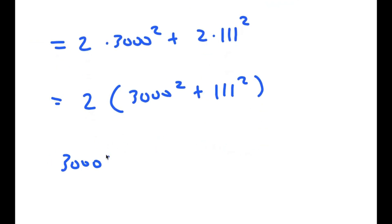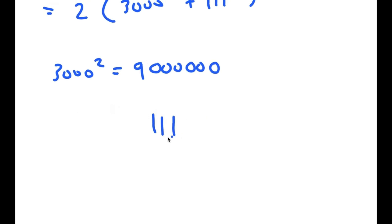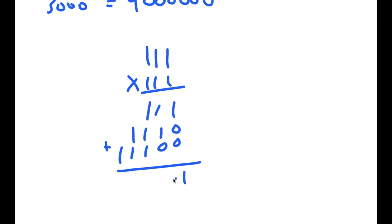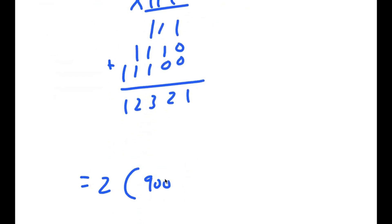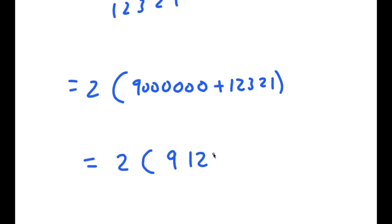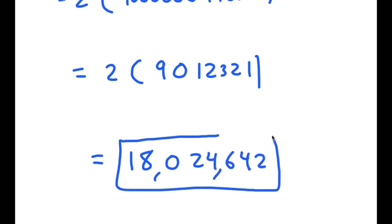Now 3,000 squared is equal to 9,000,000, and 111 squared — 111 times 111 equals 12,321. So I have 2 times 9,000,000 plus 12,321, which is 2 times 9,012,321. So 2 times this is going to be 18,024,642. This is my solution to this problem.